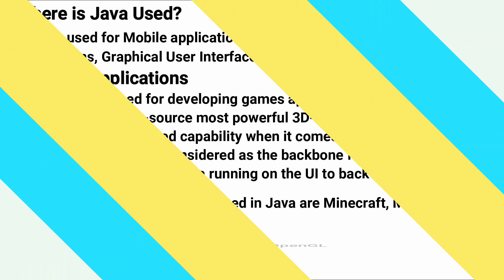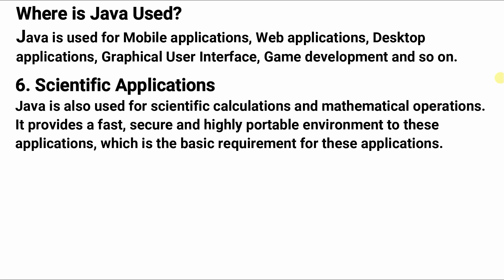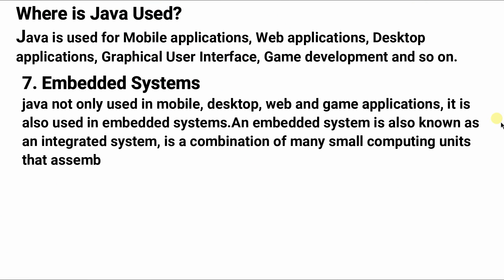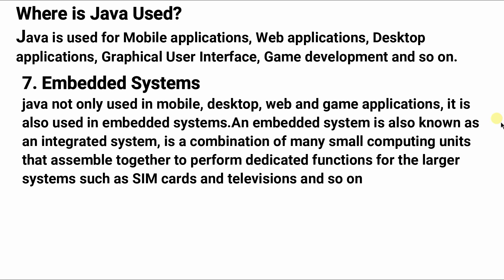Now let's move on to scientific applications and embedded systems. Java is also used for scientific applications such as calculations and mathematical operations. Scientific-related mathematical operations and calculations require developing apps that are extensively fast, highly secure, easily maintained, and highly portable. Java fulfills these needs nicely. One of the most powerful scientific applications is MATLAB, which uses Java for its interacting user interface as well as part of the core system. Java is also widely used for embedded systems — lot of electromechanical applications use embedded systems like microchips and mini computers to perform dedicated tasks. Systems such as SIM cards and televisions still use Java as their building blocks.